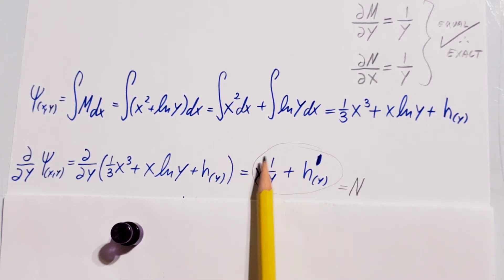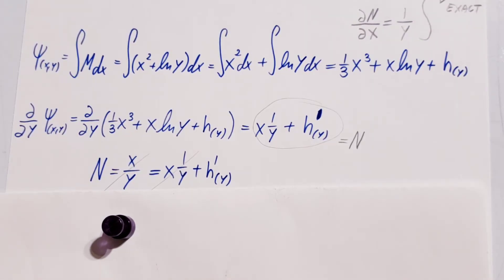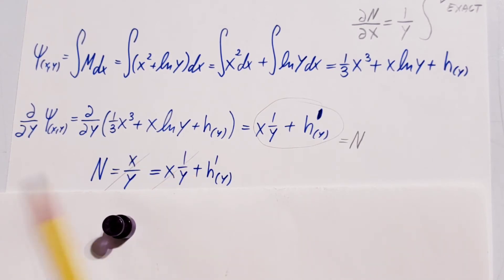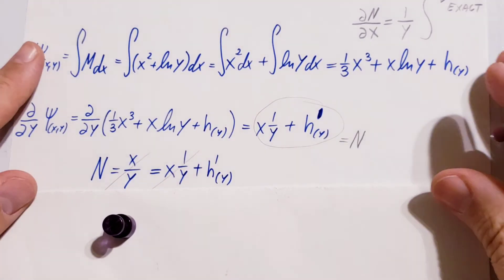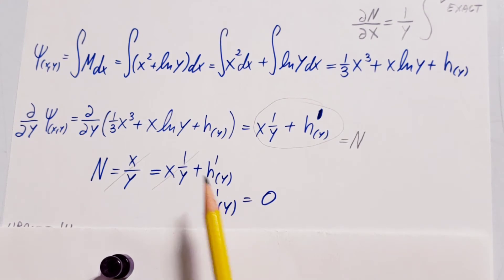Now, we need to know at this point that what we found here is the exact same thing as the term N that we designated in the original equation. This will allow us to put the two equal to each other. In the original equation N was x over y, and here was this term right here. I put it equal to each other, simplify it, and we're able to determine that h prime of y is equal to 0.